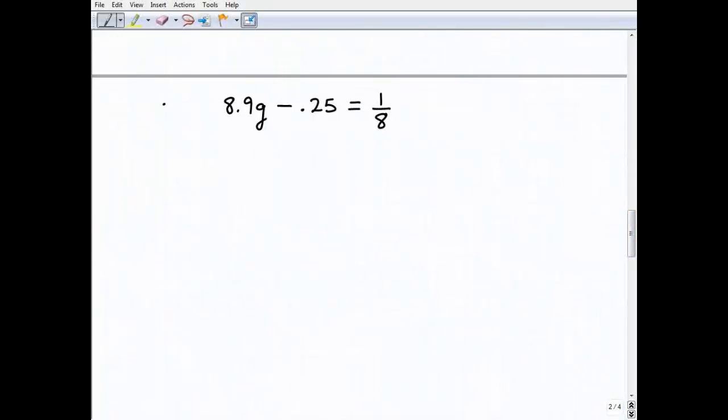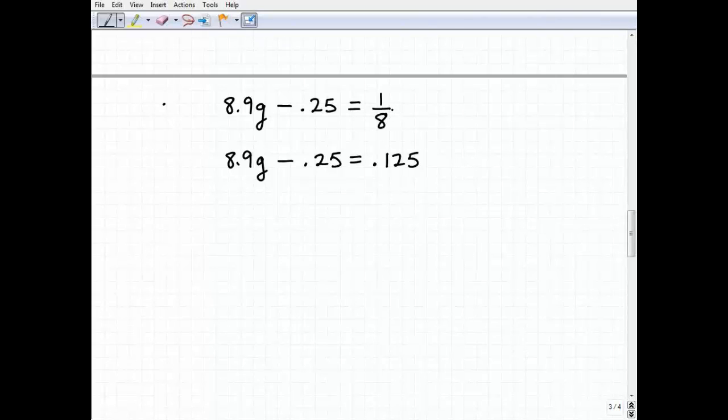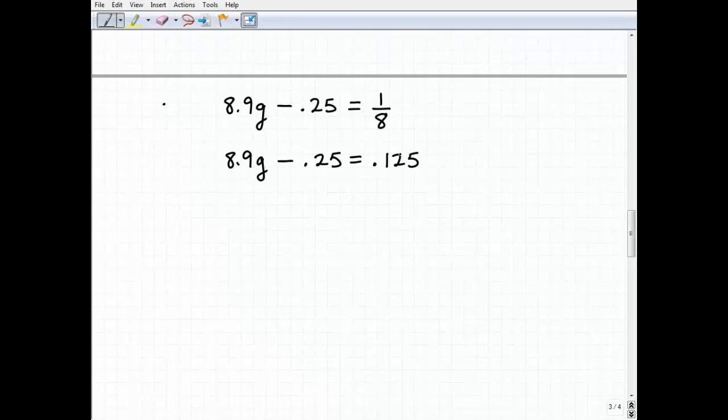So our last problem, 8.9g minus 0.25 equals one eighth. So a couple of ways you can go, you have decimals and you have a fraction. If you want to take that one eighth and just convert that into decimal to make it easier for you, you can do that. So one eighth as a decimal is 0.125. So let's just go ahead and rewrite the equation as 8.9g minus 0.25 equals 0.125. So how do you convert a fraction to a decimal? You simply divide the numerator by the denominator and you have the decimal version of that fraction.